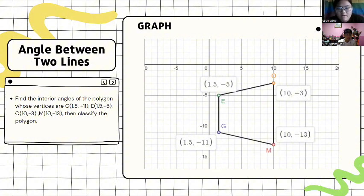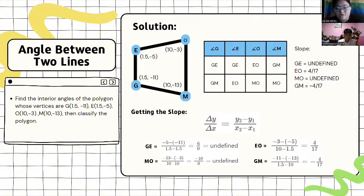So, in our graph, we have here a trapezoid. A trapezoid is a quadrilateral with one pair of opposite sides parallel.